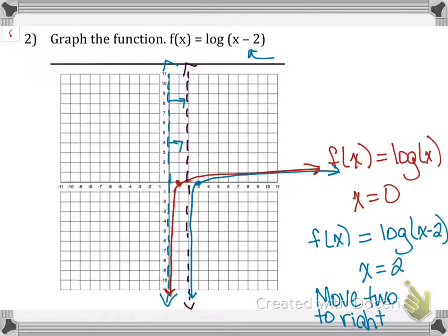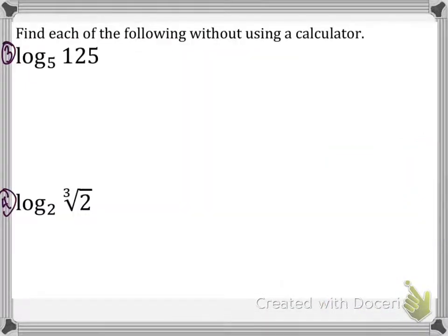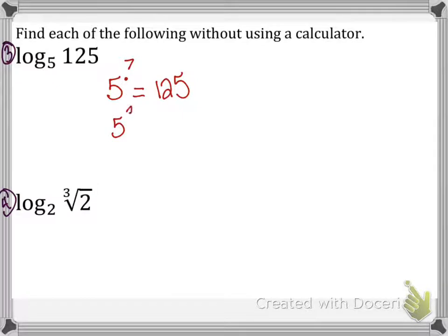Now, finding each of the following without a calculator. We have log base 5 of 125. I want to turn that into an exponent: 5 to what power equals 125? Five to the third power — 5 × 5 × 5 = 125 — so the answer is 3.